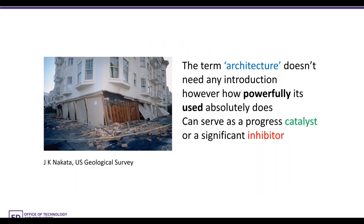I don't believe there's any introduction needed to the term itself. But what I've seen typically happen is the way it's used is where its power comes from. You could either use something to serve as a catalyst to progress, or it could become the most serious drawback and limitation that an architecture could present to any ecosystem — whether buildings, software, mechanical construction, or bridge construction. There are enough disasters that have come as a result of poor architecture, and enough successes that have stood the test of time. We should be talking about how do you get to better architecture and what does it do in the world of transformation.